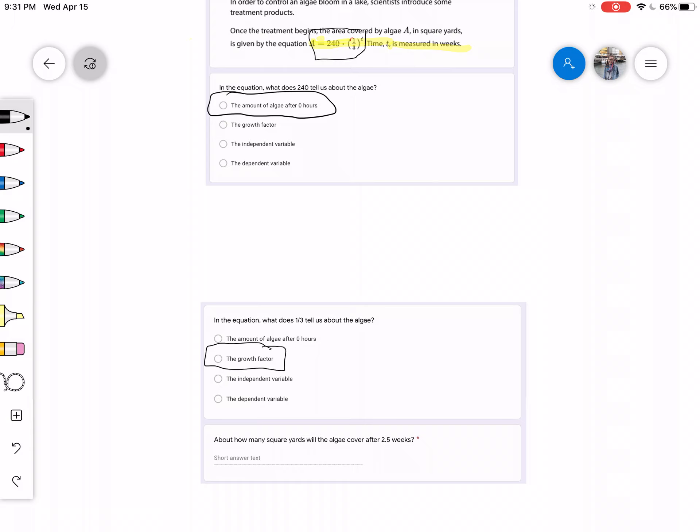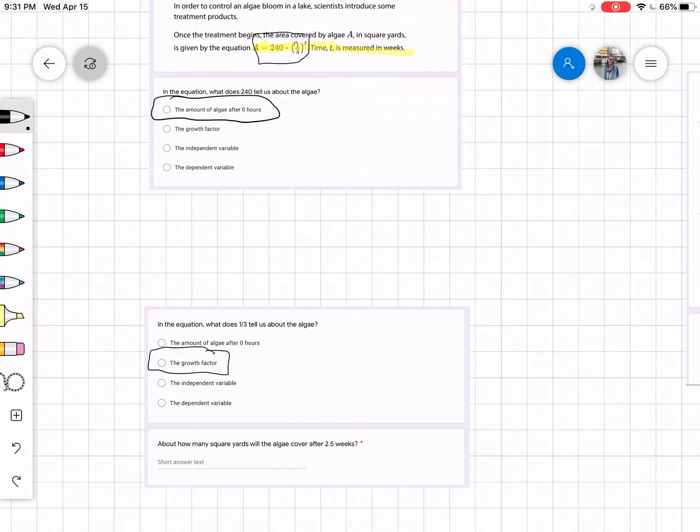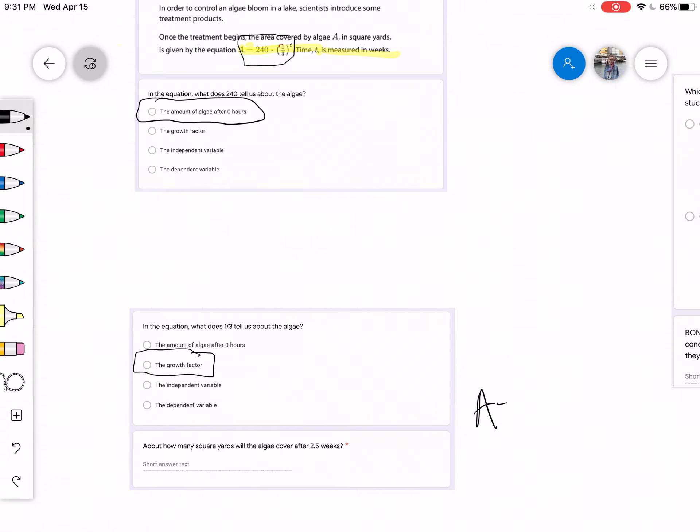Now the last problem right here kind of tricked some people. It said about how many square yards will the algae cover after 2.5 weeks? So what we're going to do, we're going to rewrite our equation. So we had A equals 240 times one-third raised to the T power.